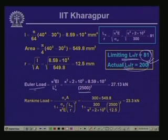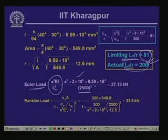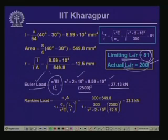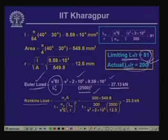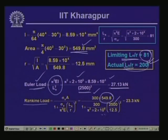Applying Euler's formula: P_cr = pi²·E·I / L_e² = pi²×(2×10⁵)×(8.59×10⁴) / 2500² = 27.13 kN. Using Rankine's formula with the same parameters gives a critical load of 23.3 kN.